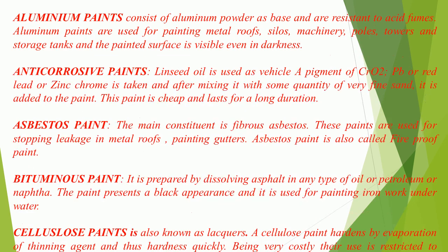Aluminium paints consist of aluminum powder as base and are resistant to acid fumes. Aluminium paints are used for painting metal roofs, silos, machinery, poles, towers, and storage tanks, and the painted surface is visible even in darkness. Anti-corrosive paints use linseed oil as vehicle; a pigment of CrO₂, Pb, red lead, or zinc chrome is taken and mixed with a small quantity of very fine sand and added to the paint. This paint is cheap and lasts for a long duration.